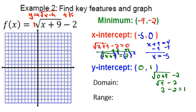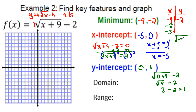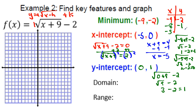Now build the table. Start with vertex (−9, −2). Going up one then up three for x-values: plug in x = −8: √(−8 + 9) − 2 = √1 − 2 = 1 − 2 = −1, giving (−8, −1). Plug in x = −5: √(−5 + 9) − 2 = √4 − 2 = 2 − 2 = 0, giving (−5, 0). The pattern of up one, up three holds.